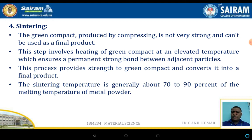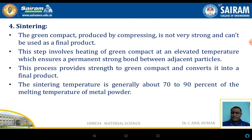The green compact produced by compressing is not very strong and cannot be used as a final product. The sintering step involves heating the green compact to an elevated temperature where permanent strong bonding takes place between the particles or crystals, providing strength to the compacted component. The sintering temperature is normally 70 to 90% of the melting temperature of the metal powder.